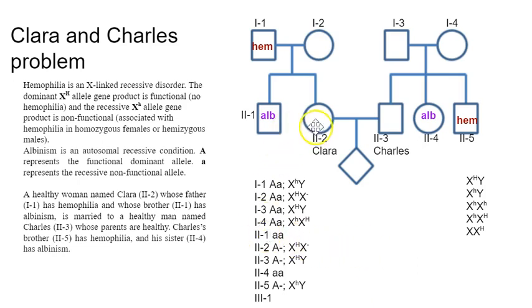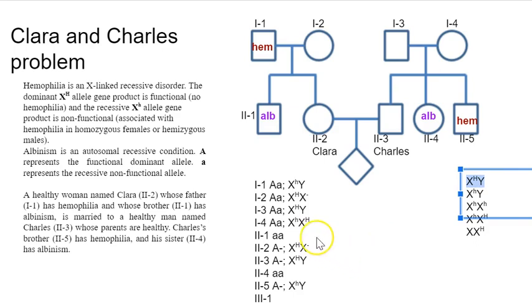So 2-1, which is Clara's brother. Clara's brother got the Y chromosome from dad because he's male. So he had to have gotten an X chromosome from mom. And mom had at least one X big H, but we don't know what the other thing was. So Clara's brother's genotype is, actually sorry, it's actually quite clear because he does not have hemophilia. So he's got to be this. I missed him earlier.